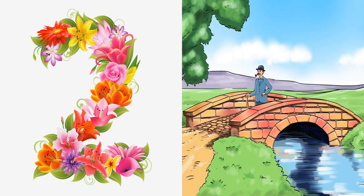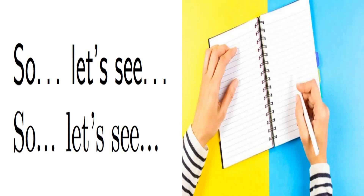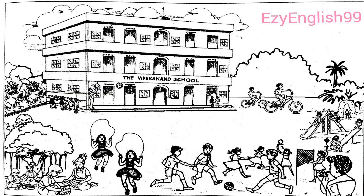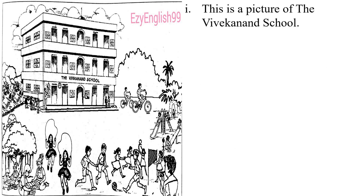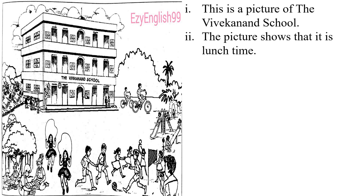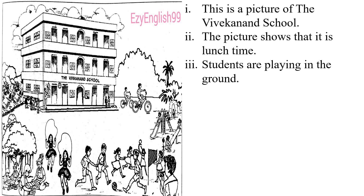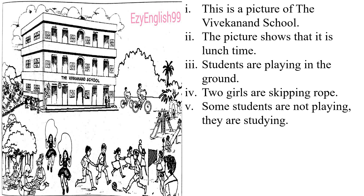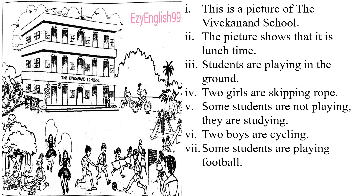In revision 12 also, you have two pictures. Let's see those pictures and start writing about them. This is the first picture in revision 12. Let's describe it. This is a picture of the Vivekanan school. The picture shows that it is lunch time. Students are playing in the ground. Two girls are skipping rope. Some students are not playing — they are studying. Two boys are cycling. Some students are playing football. Some children are sliding.